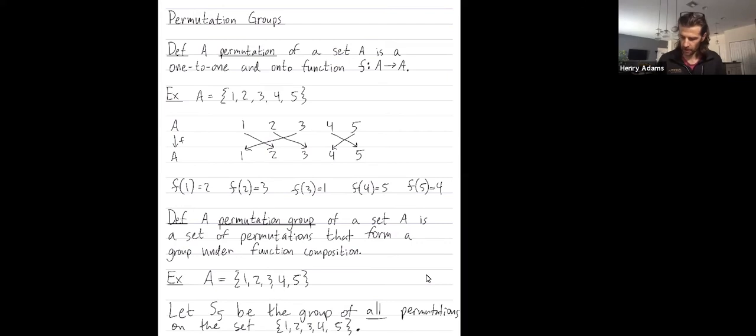More generally, S sub n is a group of all permutations on the set of numbers from 1 up to n.